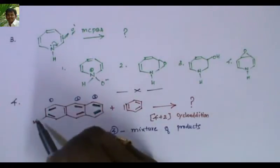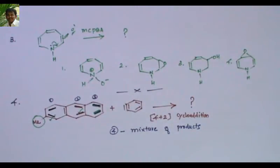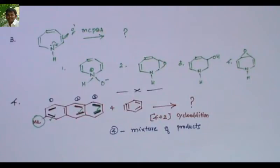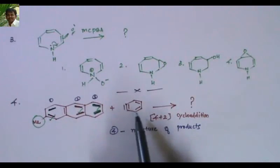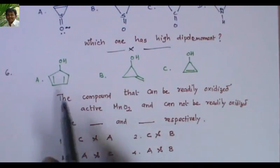The fourth problem: when anthracene bearing a methyl group is treated with benzene, it undergoes a [4+2] cycloaddition. Which diene undergoes the reaction — option one (this diene), option two (this diene), or option three (this diene)? Since we have a methyl group, there are three different diene types available. Option four is that a mixture of products forms, since benzene may add at different positions. Which one is correct?